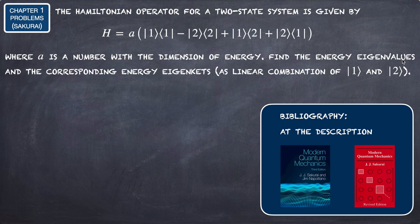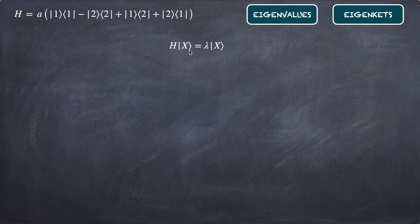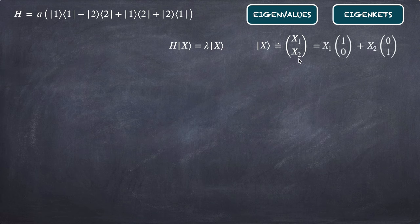We need to find the corresponding eigenkets as linear combinations of |1⟩ and |2⟩. We are looking for the eigenvalue equation where the eigenket, let's call it |X⟩, in matrix representation is equal to a column matrix (x₁, x₂), which equals x₁ multiplying (1, 0) plus x₂ multiplying (0, 1). The ket |1⟩ is (1, 0) and the ket |2⟩ is (0, 1).